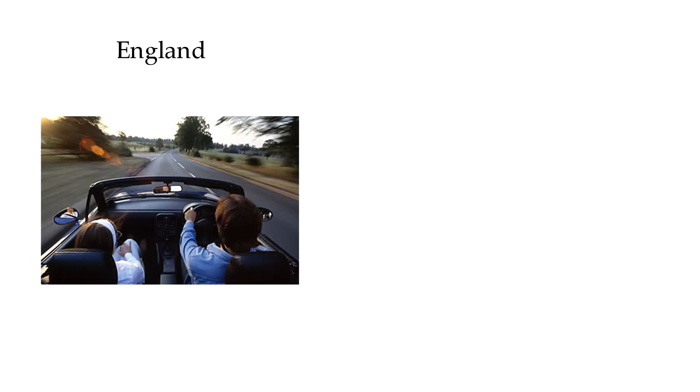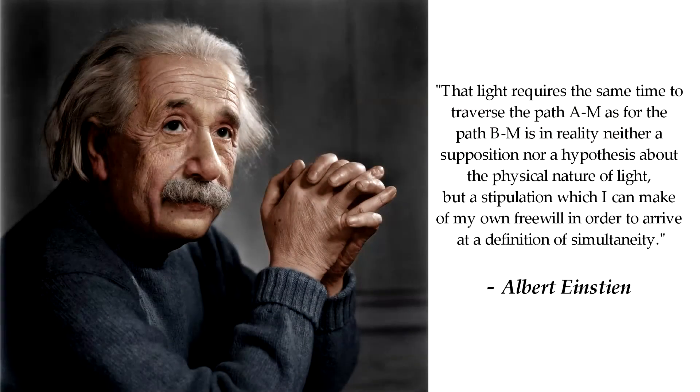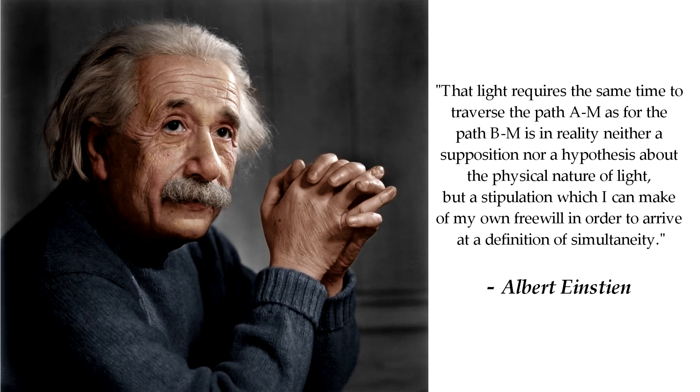Like driving on the left side of the road, it's something we all agreed to and it works, but you can pick another convention and drive on the right side of the road when you are in America and it works just as well. Albert Einstein said that light requires the same time to traverse the path A to M as for the path B to M is in reality neither a supposition nor a hypothesis by the physical nature of light, but a stipulation which I can make of my own free will in order to arrive at the definition of simultaneity. Einstein knew you can't measure the one-way speed of light, but that it is something you choose.